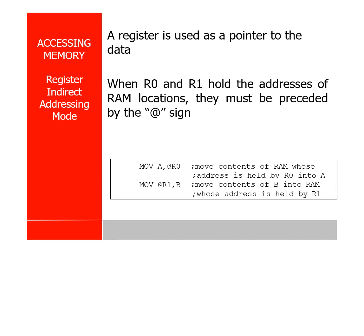Listen carefully because it is a bit confusing. Register indirect addressing means you are taking data to a register from a memory location whose address is given in a register. For example, writing MOV A, @R0 — suppose R0 contains 40, that means MOV A, 40.